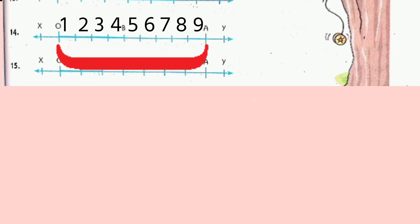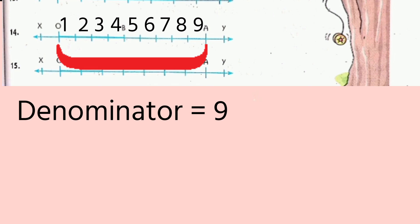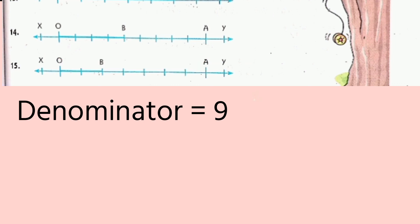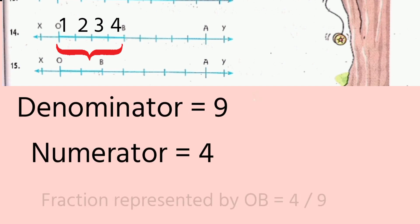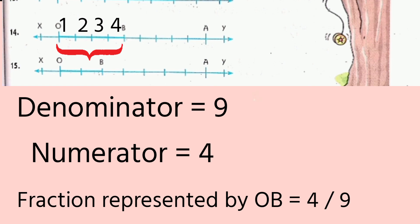Let us move on to question number 14. Again, the number line XY is there. On this number line, point O and A are there. Let us count in how many parts OA is divided: 1, 2, 3, 4, 5, 6, 7, 8, 9. Therefore OA is divided into 9 equal parts. Out of 9 equal parts, we have to consider the number of parts falling under OB. Let us count: 1, 2, 3, 4. Out of 9 equal parts, we consider 4 parts. Therefore, the fraction represented by OB on this number line will be 4 by 9.